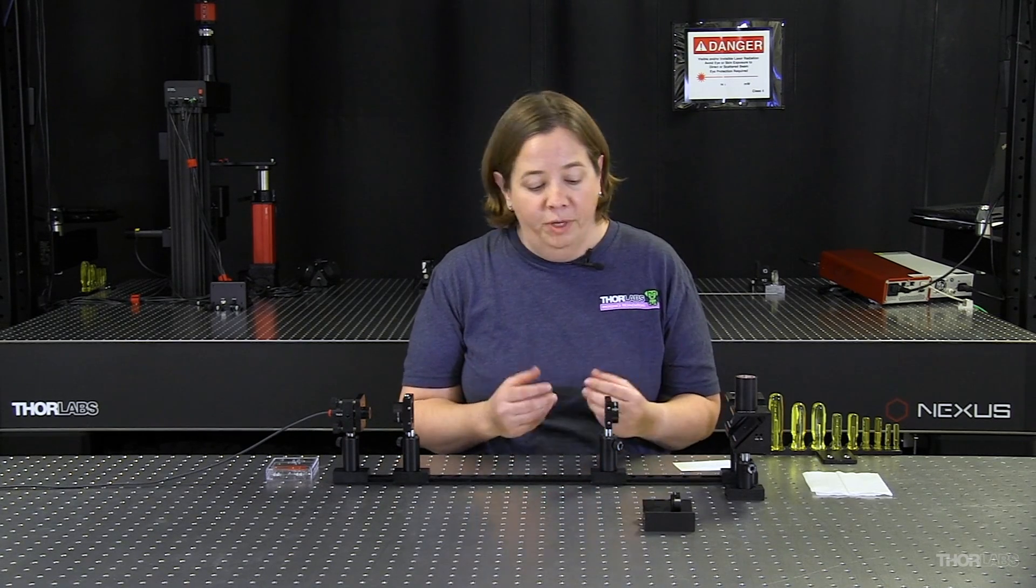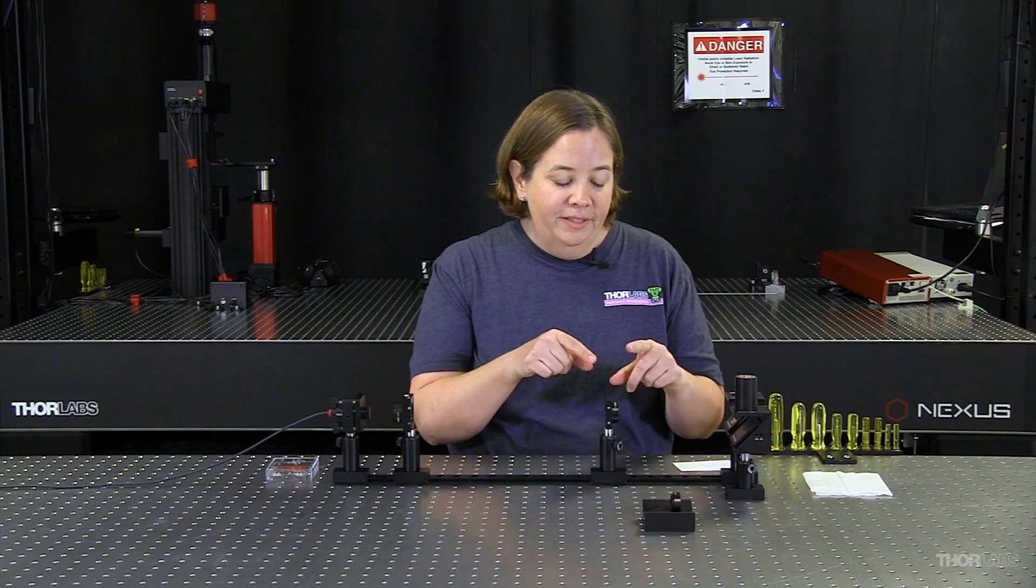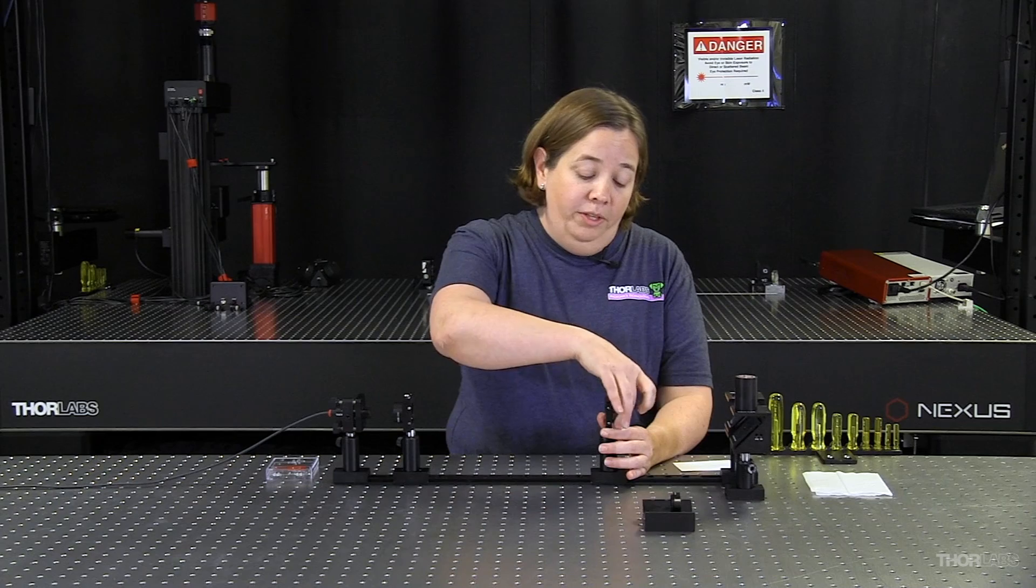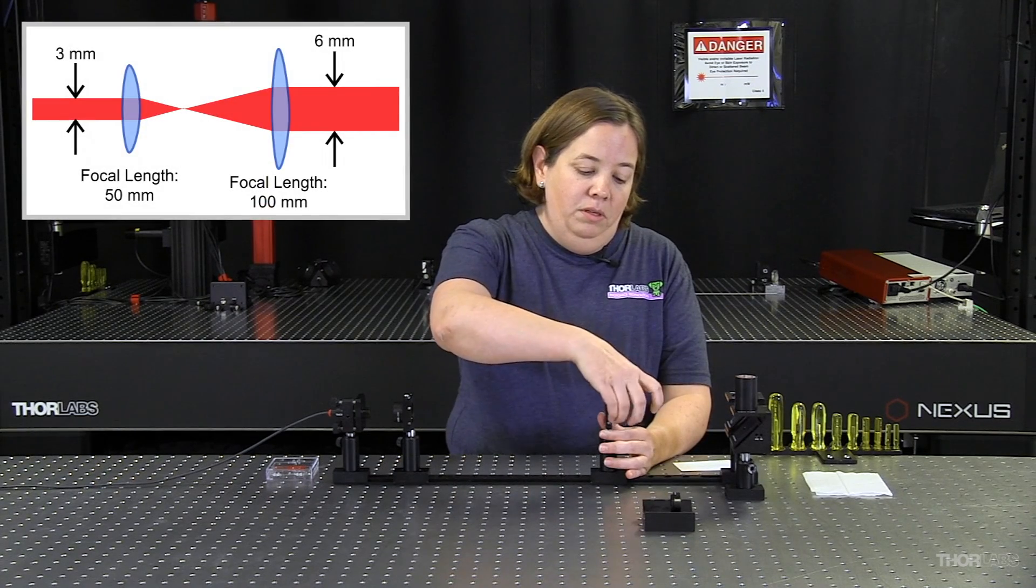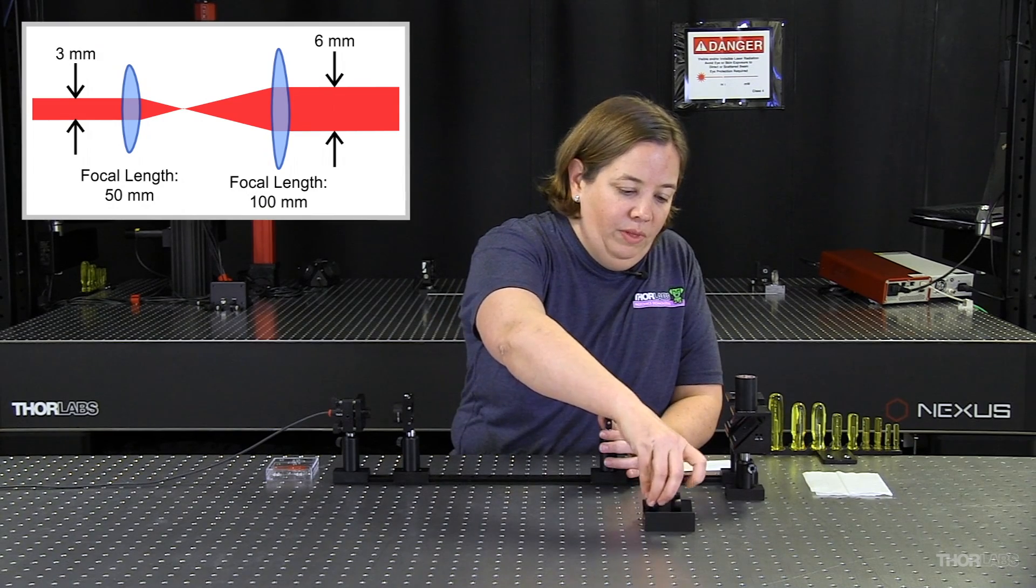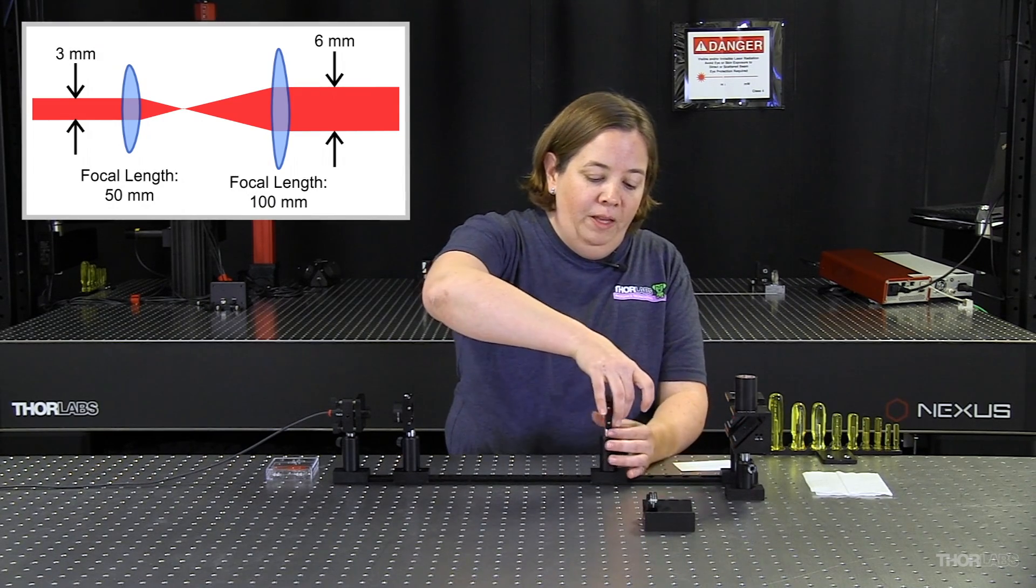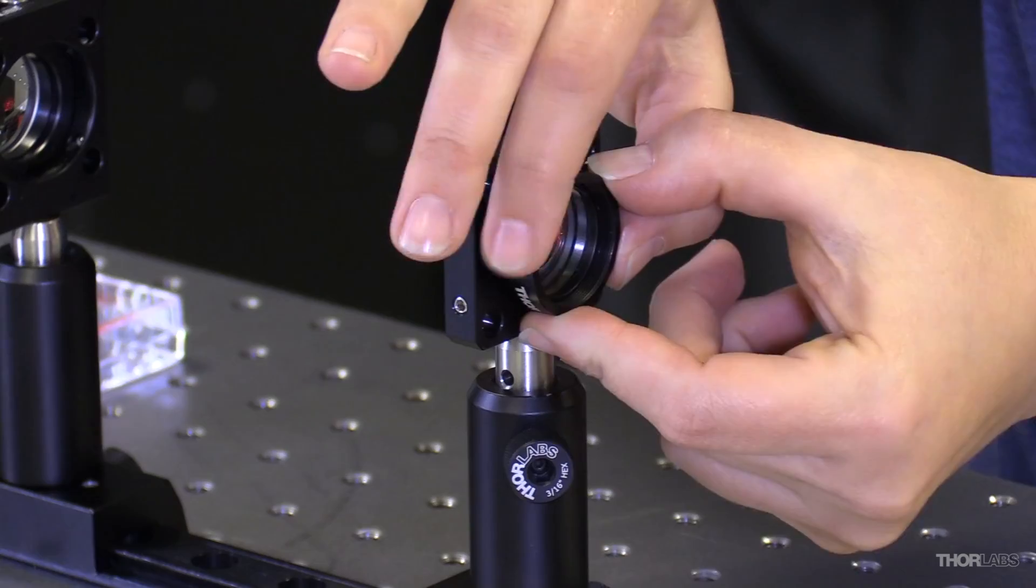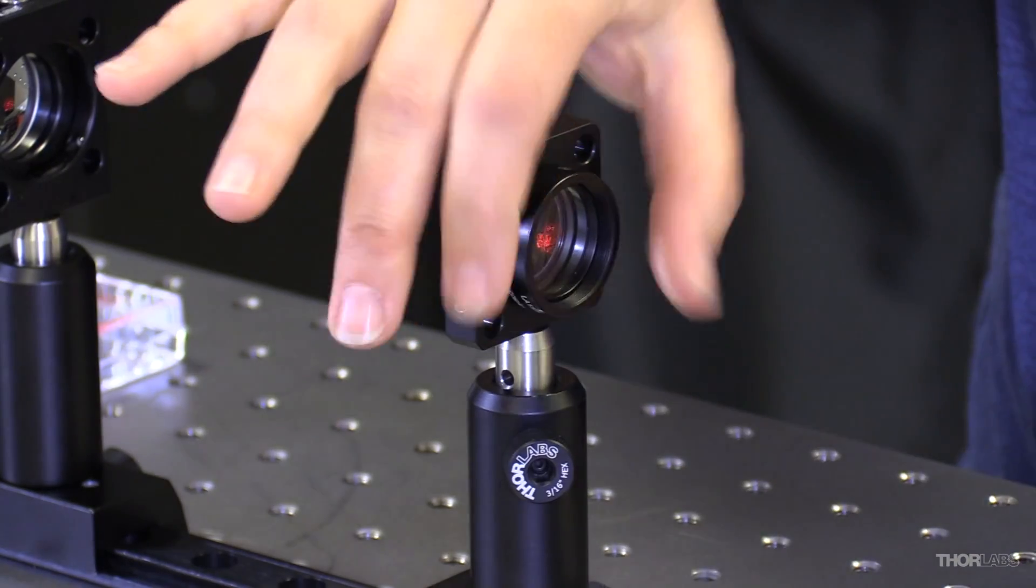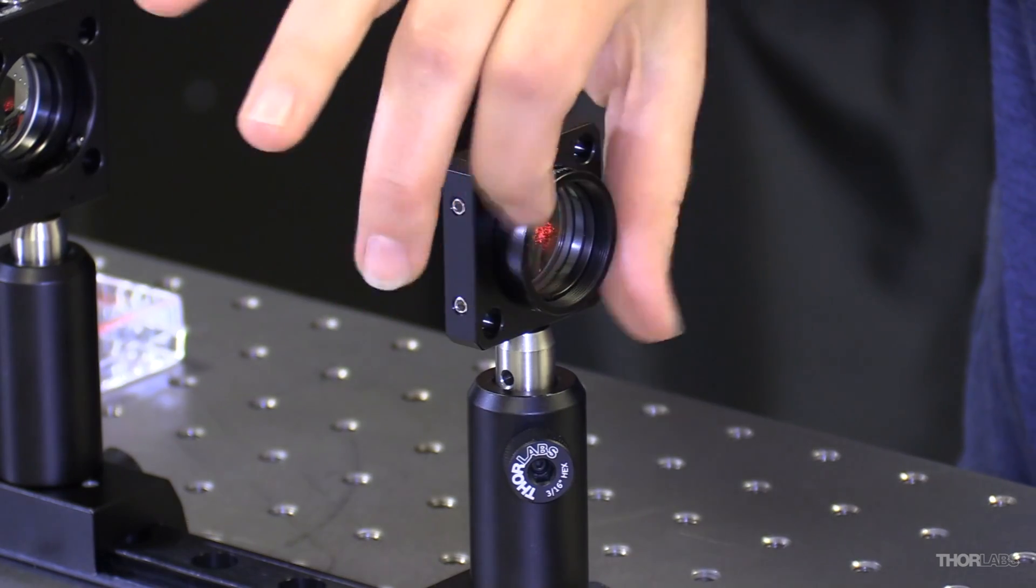So let's also look at what happens with a smaller beam. I'm going to take this lens out and replace it with a shorter focal length. And so I should have a smaller beam. Now this shearing interferometer is designed for a larger beam diameter, so it is not designed for this smaller beam, and I expect it won't work. But I'll have to see what it looks like.